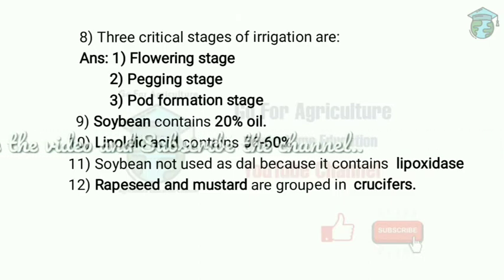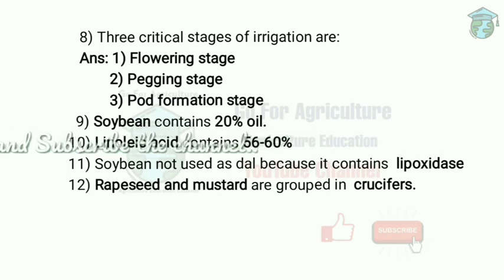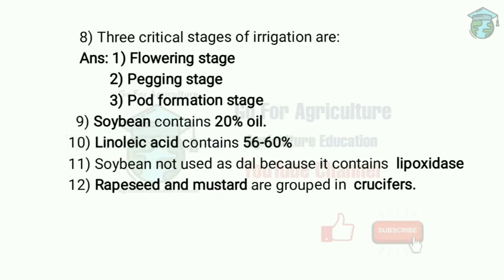Soybean is also low in sulfur-containing amino acids such as methionine and cysteine. The origin of soybean is China. Rapeseed and mustard are grouped under the family Crucifers.